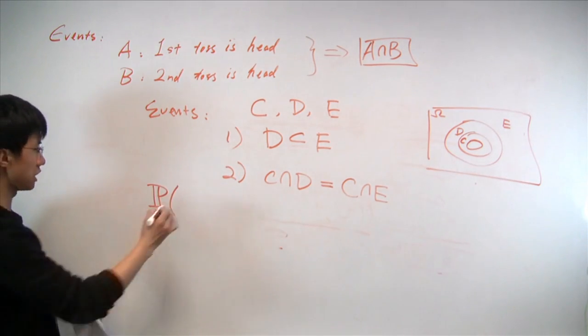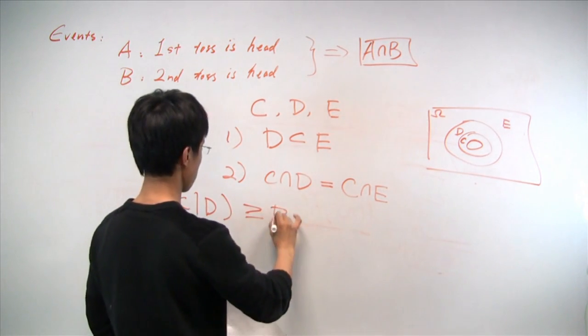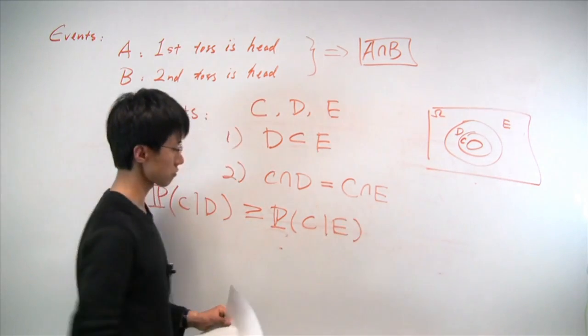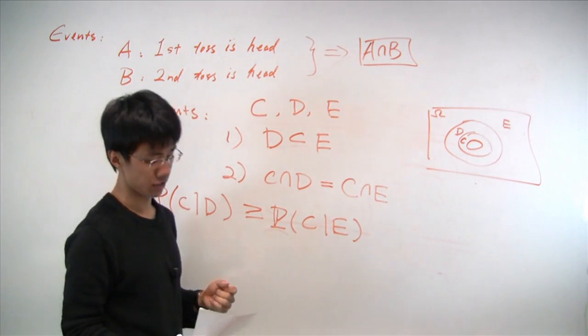That the probability of C, conditional on D, will be no smaller than the probability of C, conditional on event E. And this will be the more general form of the inequality that we saw before.